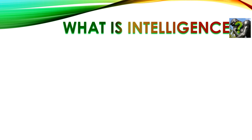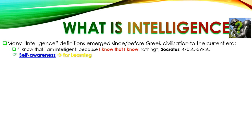First things first — what is really intelligence? Intelligence has been the topic of many scholars since the start of civilization, before and since the Greek era. We'll start with a statement by Socrates, one of the most famous scholars of that time. He said: 'I know that I'm intelligent. Why? Because I know that I know nothing.' This reflects one of the first and most important pillars of intelligence, which is self-awareness.